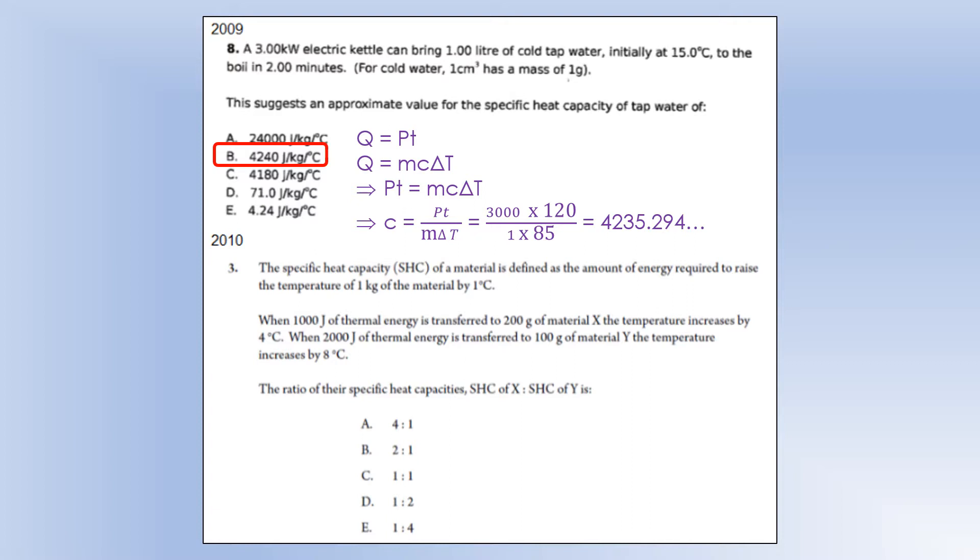The specific heat capacity of a material is defined as the amount of energy required to raise the temperature of 1 kilogram of the material by 1 degree Celsius. When 1000 joules of thermal energy is transferred to 200 grams of material X, the temperature increases by 4 degrees. When 2000 joules of thermal energy is transferred to 100 kilograms of material Y, the temperature increases by 8 degrees. The ratio of their specific heat capacity, X to Y, is... What I've done here is I've made expressions for each of the two. For the first one, we supplied 1000 joules. There were 200 grams and it went up by 4 degrees. The second one, there are 2000 joules for 100 grams and it went up by 8 degrees. That gave me values for C1 and C2. You can see that the specific heat capacity of Y is double that of X. So, it's option D.